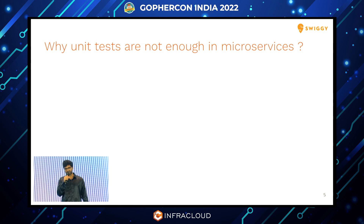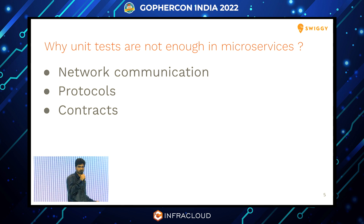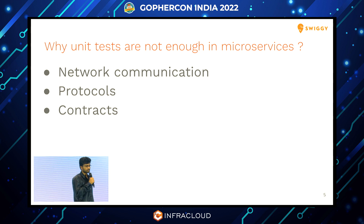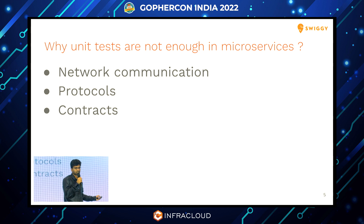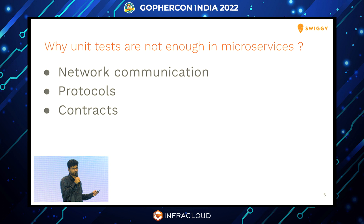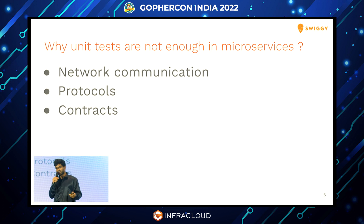If we list down the challenges and why unit tests were not enough, there are three things not covered by unit tests: network communication is not covered, the protocols are not covered, and the API contract is not covered. We typically mock the data and simply test the service logic part. But in a microservice world, network communication is also a major part of the service, which remains untested using unit tests. Due to this, even if you had written good unit tests, you were seeing issues in production.